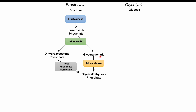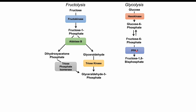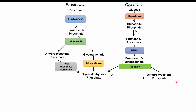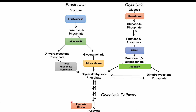In glycolysis, glucose is acted on by the enzyme hexokinase to phosphorylate it to glucose-6-phosphate. There is a reversible step from glucose-6-phosphate to fructose-6-phosphate, which is then acted on by PFK1 (phosphofructokinase-1) to form fructose-1,6-bisphosphate. An aldolase enzyme breaks fructose-1,6-bisphosphate in half, forming glyceraldehyde-3-phosphate and dihydroxyacetone phosphate. The glyceraldehyde-3-phosphate is then shunted into the glycolysis pathway, ultimately ending with pyruvate formed by pyruvate kinase.